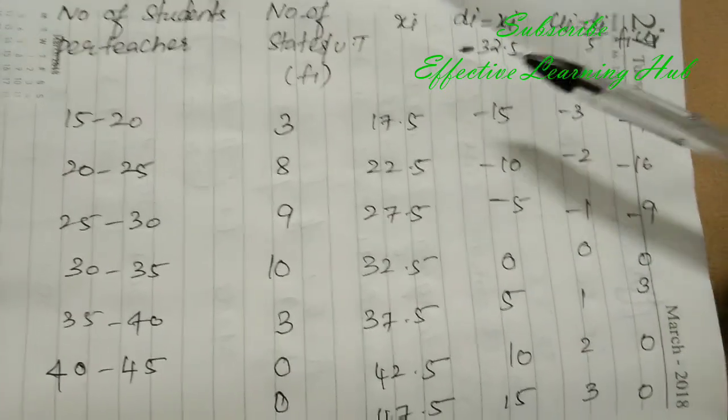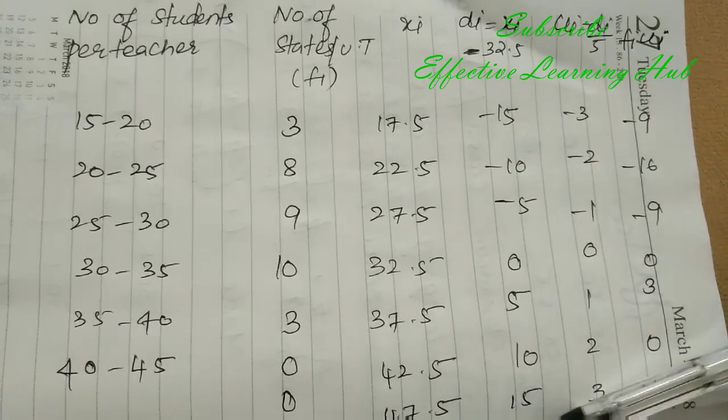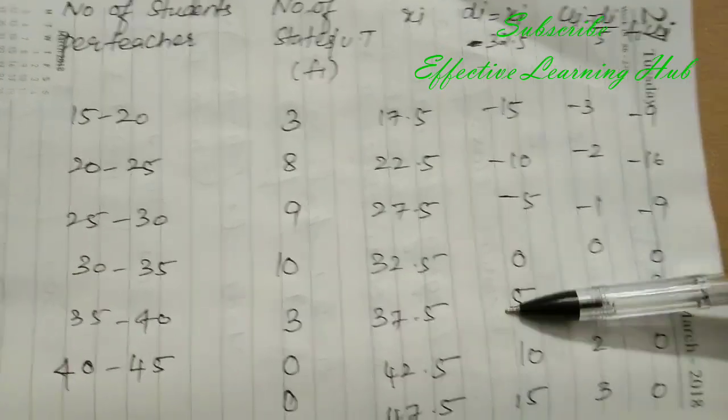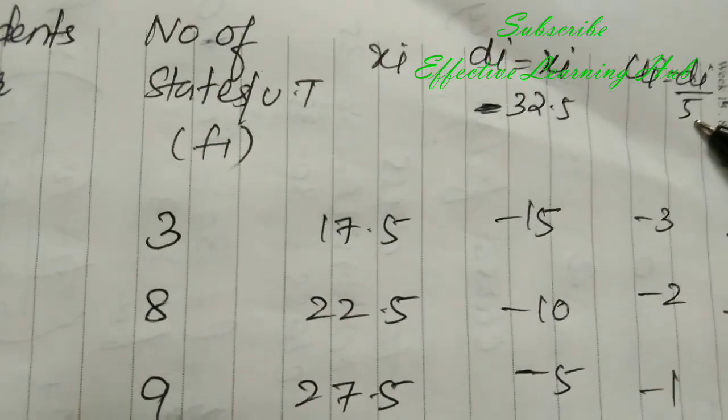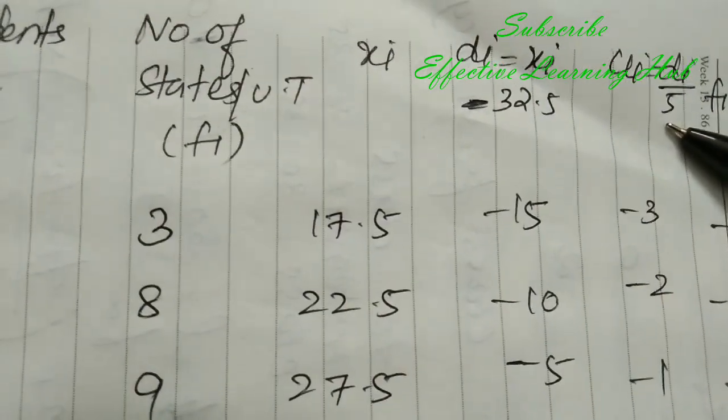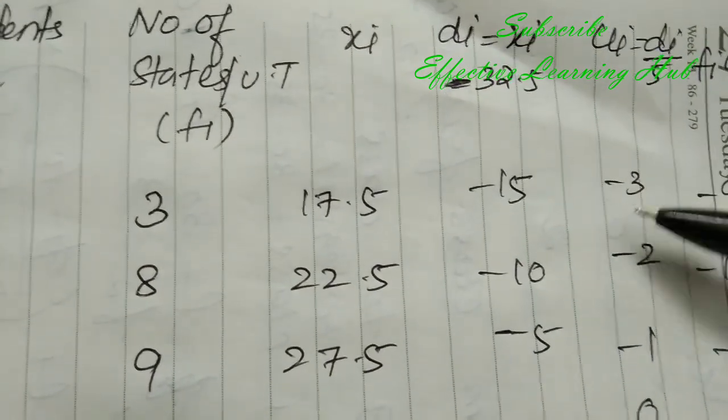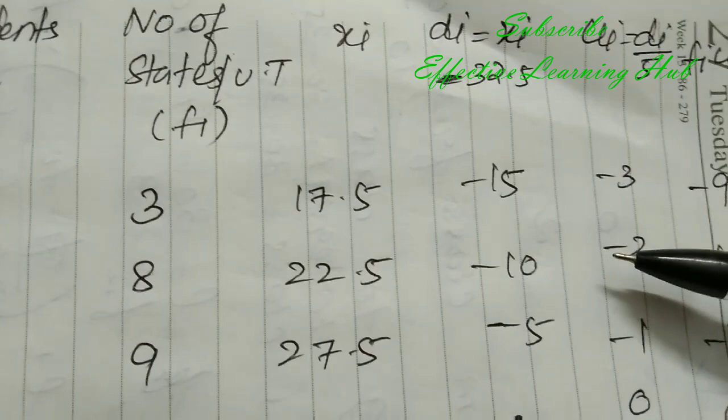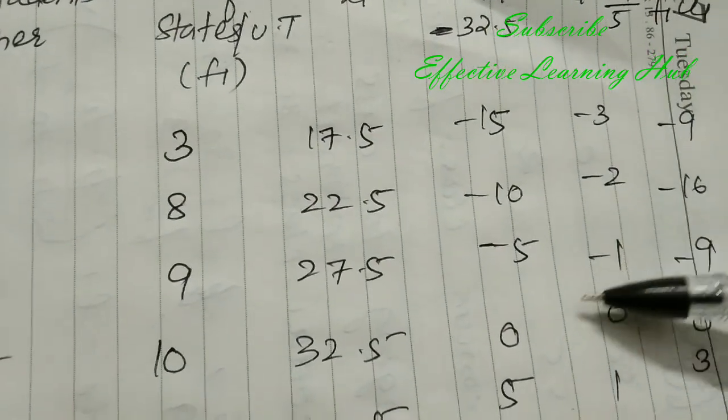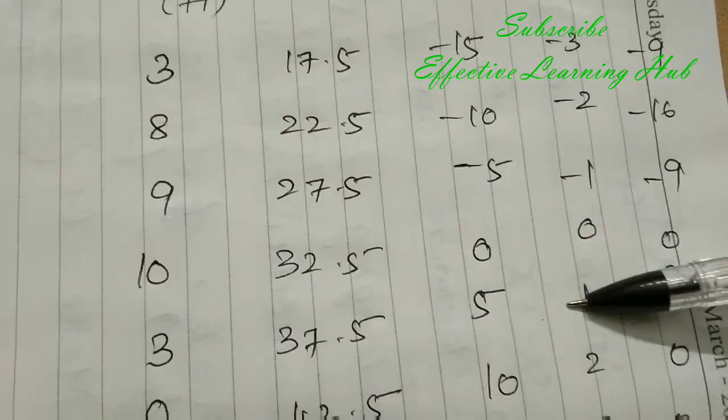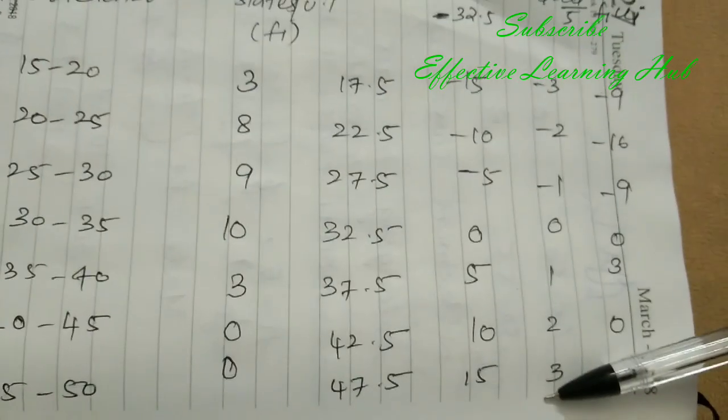Now ui equal to di divided by 5. ui equal to di by 5: minus 15 divided by 5 is minus 3; minus 10 divided by 5 is minus 2; minus 5 divided by 5 is minus 1; 0 divided by 5 is 0; 5 divided by 5 is 1; 10 divided by 5 is 2; 15 divided by 5 is 3.